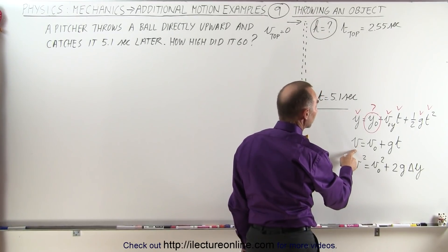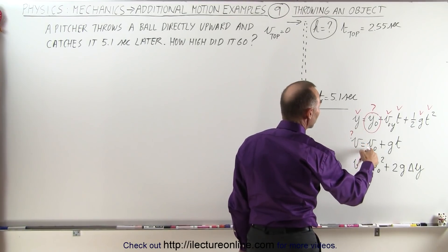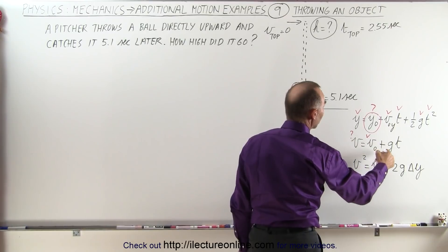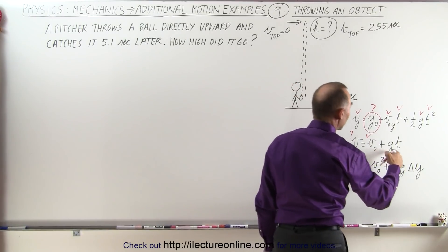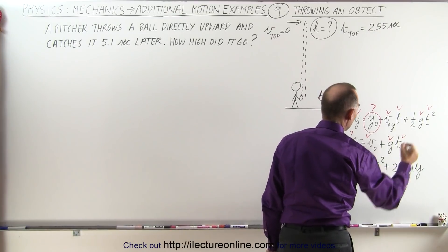Next we can look at this equation and see if we can use this one instead. So the final velocity at the bottom, well we don't know what that is. The initial velocity at the top, we know that. g, well we know that, so that would be equal to 9.8 or negative 9.8, and the time we know that.